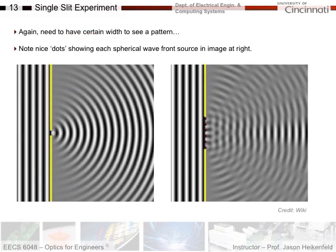And again, you have to have a certain width to see a pattern. If it's so small that you only have one radiator, then that one radiator just goes in all directions like this, so you don't get diffraction.